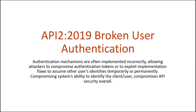Moving on: API2, broken user authentication. When we talk about authorization, we're talking about what you can do; authentication is who you are — things like logging in. Authentication mechanisms are often implemented incorrectly, allowing attackers to compromise authentication tokens or exploit implementation flaws to assume another user's identity temporarily or permanently. We're talking about issues with sessions — something like session fixation — account takeovers, being able to log in and perform actions as somebody else. If you don't know the person logged in truly is who you think they are, your entire API can be exposed to these issues.